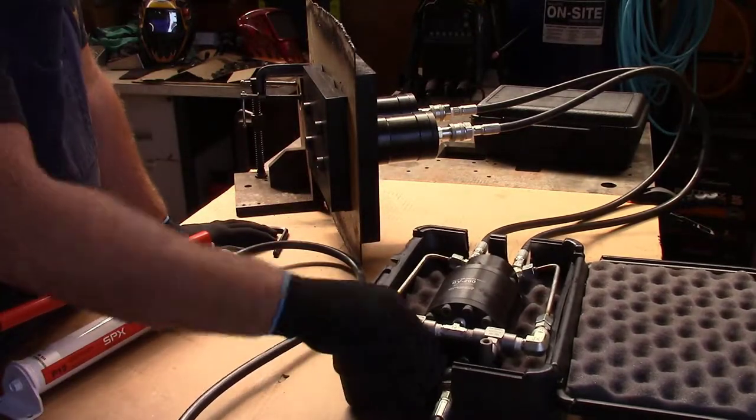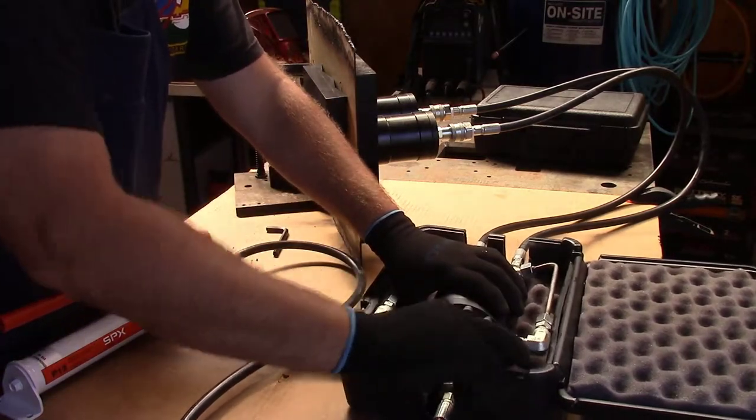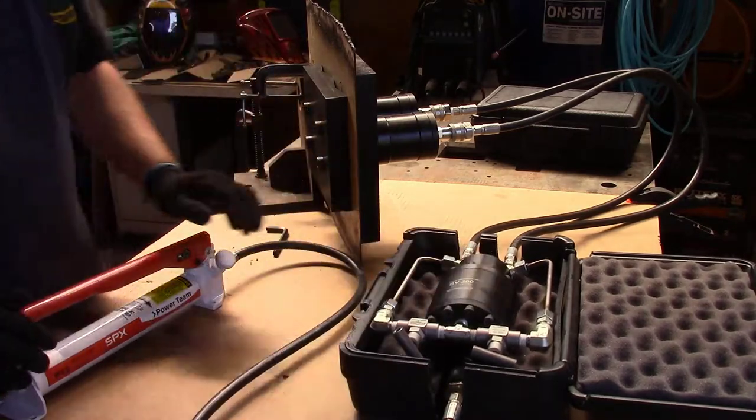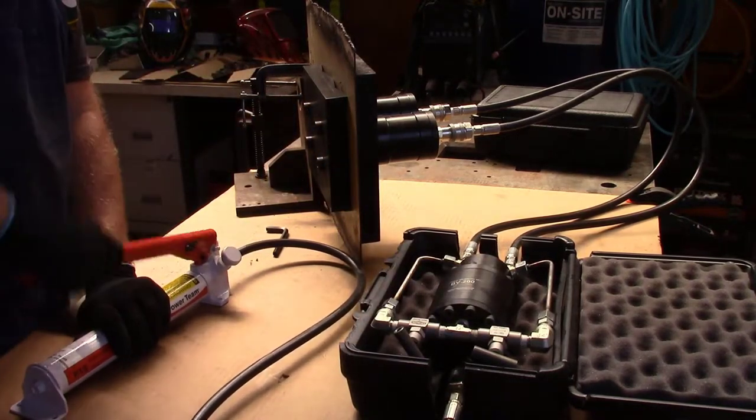At this point we're going to close our two valves on our balancing valve. And we want to make sure they are securely closed. And what that does is now we force the cylinders to drive in parallel mode.